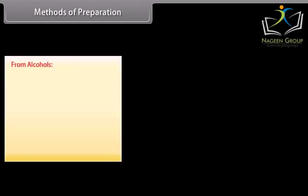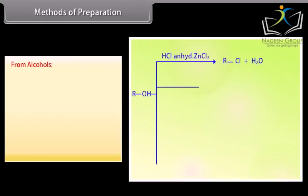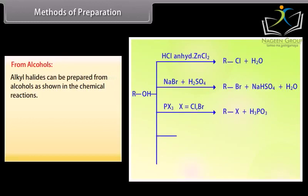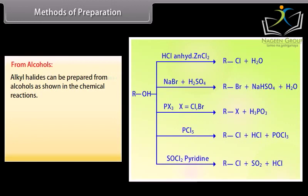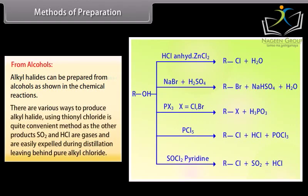Methods of Preparation — Alkyl halides. Alkyl halides can be prepared from alcohols as shown in the chemical reactions. One convenient method uses thionyl chloride, since the other products SO2 and HCl are gases and are easily expelled during distillation, leaving behind pure alkyl chloride.